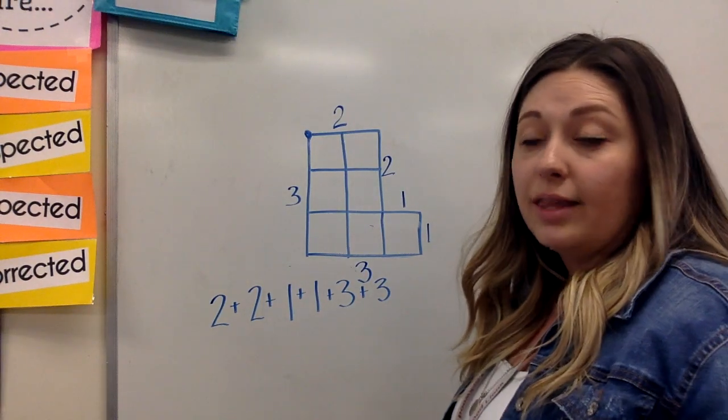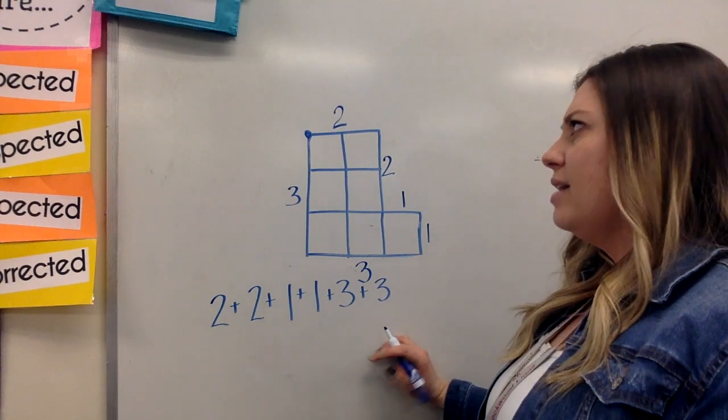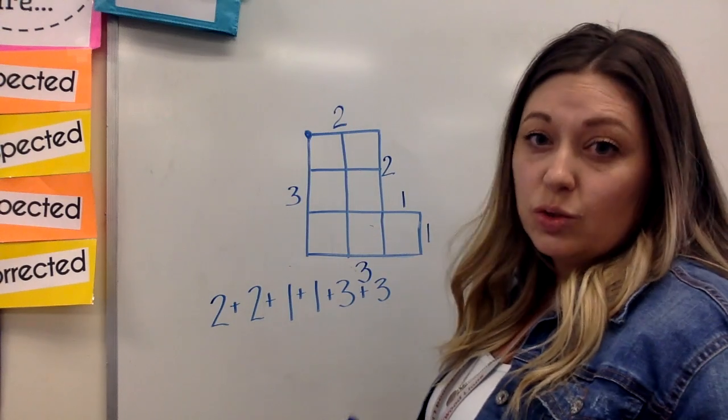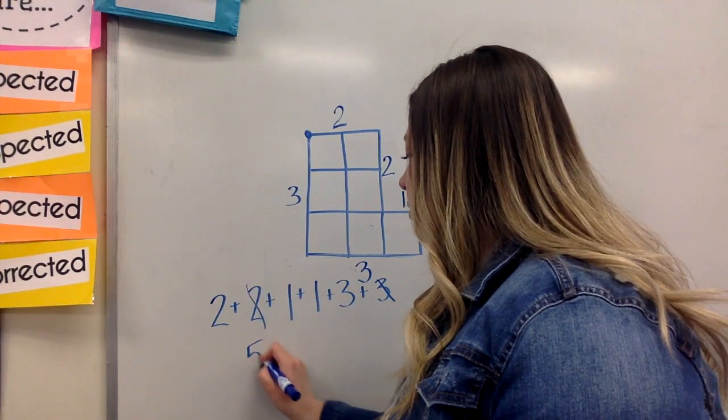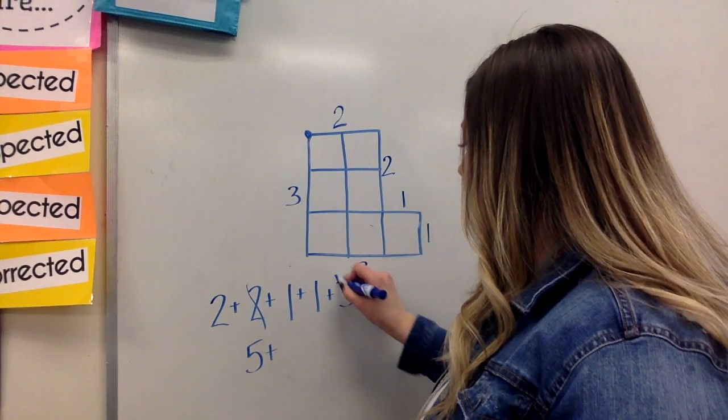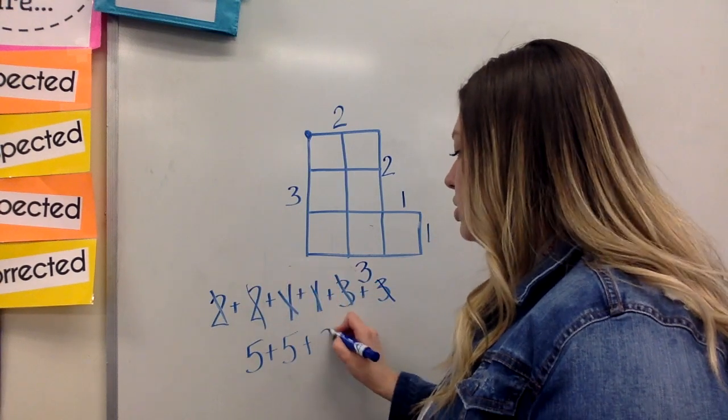So when I do this, I'm going to look for friendly numbers again that add up to something that's easy to work with. I don't have any that right away add up to ten, so I want to go by fives this time. So right away I see these two would be five, and I see these two would be another five, and then these are left, and they add up to be two.